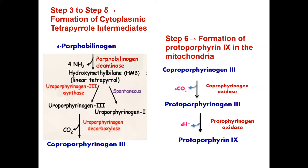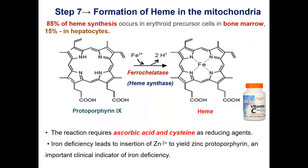In mitochondria, coproporphyrinogen 3 is converted to protoporphyrin-9 by a series of decarboxylation and oxidation reactions. 85% of heme synthesis occurs in erythroid precursor cells in bone marrow, and 15% in hepatocytes.